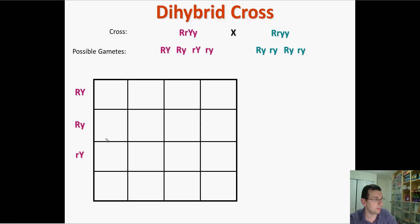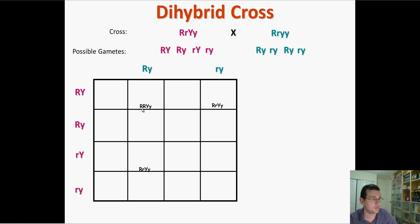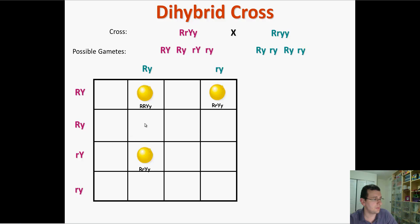You separate and put one gamete per box. Since you only have two types of gametes for one parent, you only need two boxes — a two-by-four Punnett square. The first three combinations are all dominant for both traits, giving you round and yellow peas.